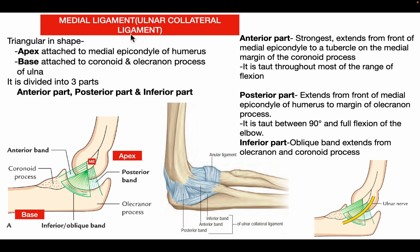The ulnar collateral ligament is triangular in shape with an apex and a base. The apex is attached to the medial epicondyle of the humerus, while the base is attached to the coronoid and olecranon processes of the ulna. It has three parts: the anterior band — the strongest, extending from the medial epicondyle to the tubercle on the medial margin of the coronoid process, taut throughout most of the range of flexion; the posterior band, extending to the margin of the olecranon process, taut between 90° and full flexion; and the inferior oblique band, extending between the olecranon and coronoid processes.